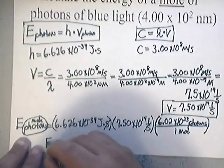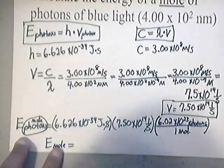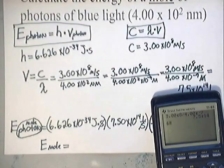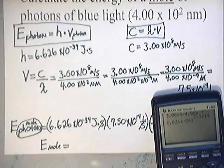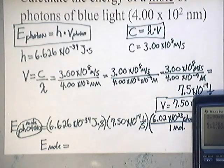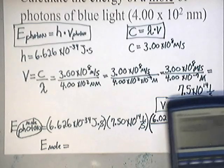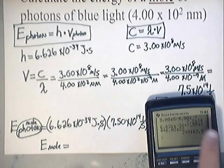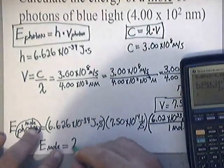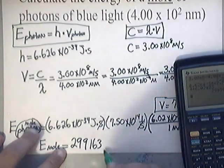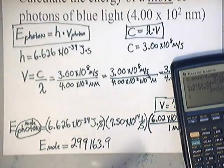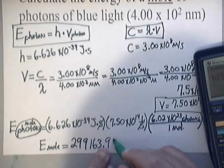The energy of a mole is going to be equal to the following: 6.626 times 10 to the negative 34th times 7.50 times 10 to the 14th times 6.02 times 10 to the 23rd. Punch all that into the calculator, press enter, and I end up getting a crazy number at first. I end up getting 299163.9. That's what's on the calculator. That's actually right. And the units is joules per mole.